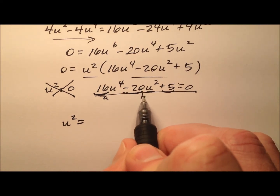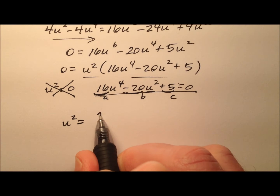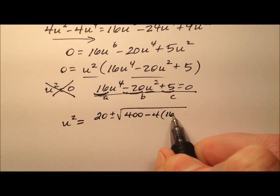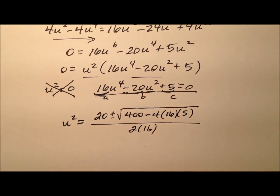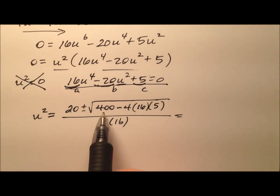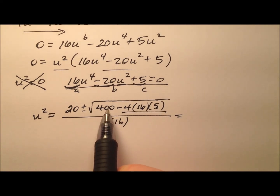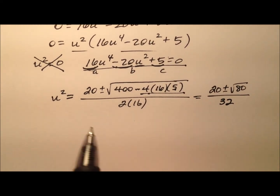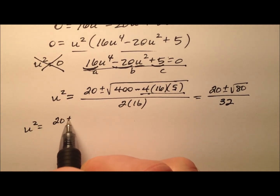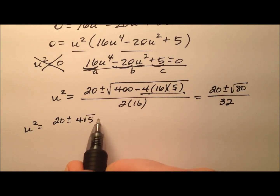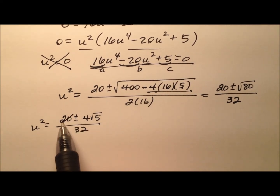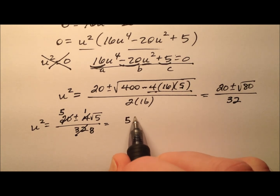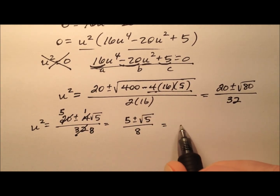The opposite of b is positive 20, plus or minus the square root of b squared minus 4ac, all over 2a. So that's 20 plus or minus the square root of 400 minus 320, all over 32. The square root of 80 simplifies to 4 times the square root of 5, all over 32. Factoring and canceling a 4 out of everything gives u squared equals 5 plus or minus the square root of 5, all over 8.